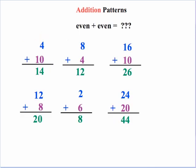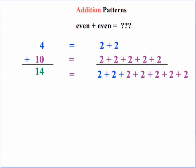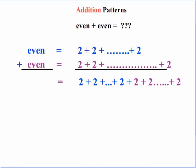Let's take even plus even. It looks like the sums are coming out even. Any even number can be broken down to a sum of 2s, because any even number is divisible by 2. For example, we can break 4 into 2 plus 2, and break 10 into five 2s. When we add them all together, we have a bunch of 2s that come out to be 14. In the generic case, the first even number is a bunch of 2s, the second even number is another bunch of 2s, and the end result is a whole bunch of 2s added together — still an even number.